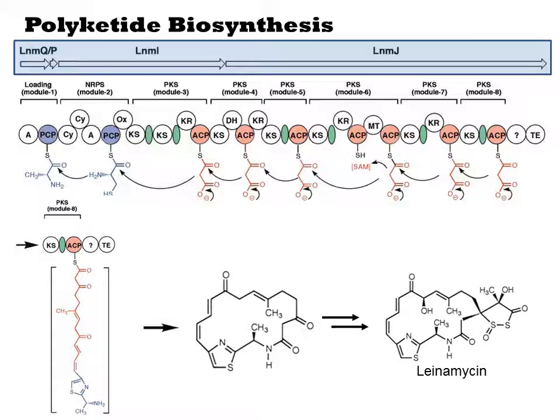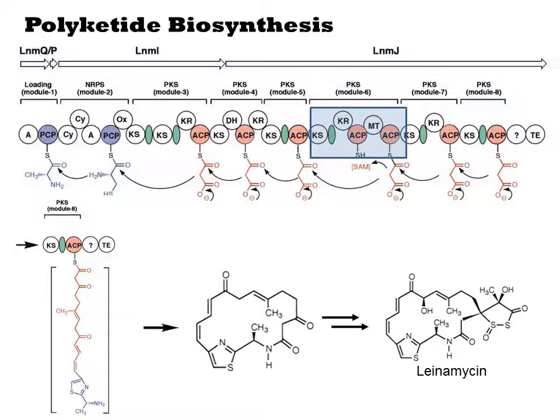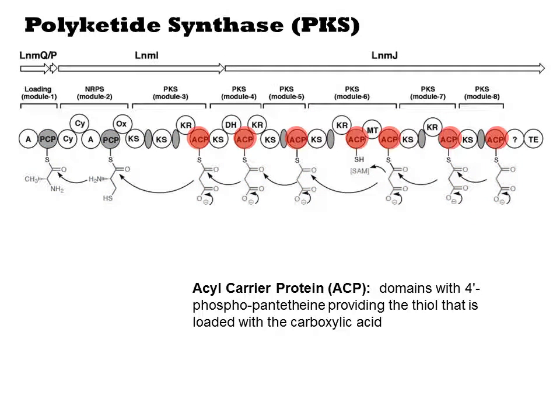So we have one level of organization called modules that correlate with the addition of one malonate unit. Within each of these modules, there is another level of organization of domains, shown as the little circles, that each perform a specific step in the condensation and modification of each added monomer. Each elongation module encodes an acyl carrier protein or ACP domain, which is how the growing chain is attached to the megasynthase. Each ACP is modified with a phosphopantetheine linker, which provides the thiol, which attaches to the growing chain as a thioester.